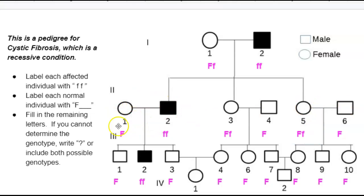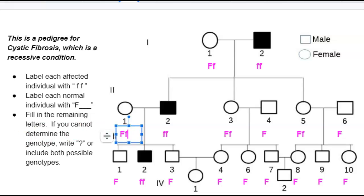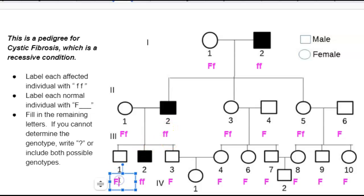Next, let's go over to this individual with cystic fibrosis. He marries this woman and they have a child with cystic fibrosis, which means a little f had to come from this parent and a little f from that parent. So we're going to add a little f to mom. The rest of the kids had a big F from mom, which means the second letter has to come from dad. Dad only has a little f to give, so these two are going to be big F, little f.